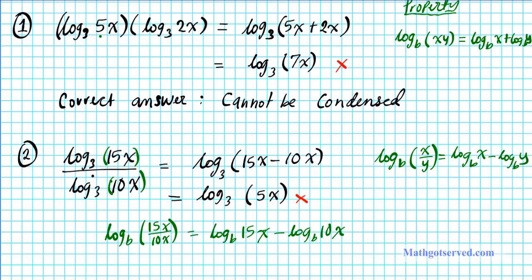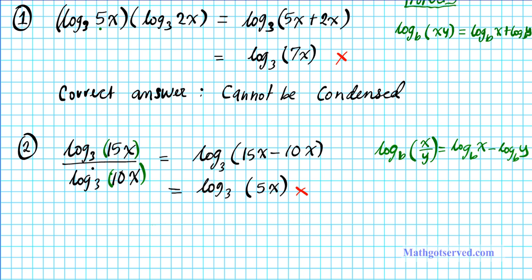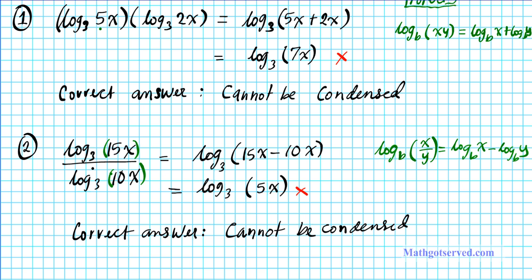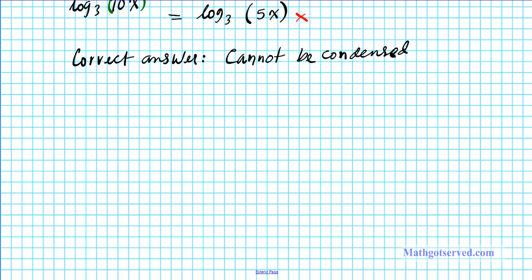Had you instead had log base b of 15x over 10x — a single log with a quotient argument — then you could write it as log base b of 15x minus log base b of 10x. Note that this property expands; it doesn't condense expressions. So the correct answer to problem two is that the expression cannot be condensed into a single logarithmic expression.